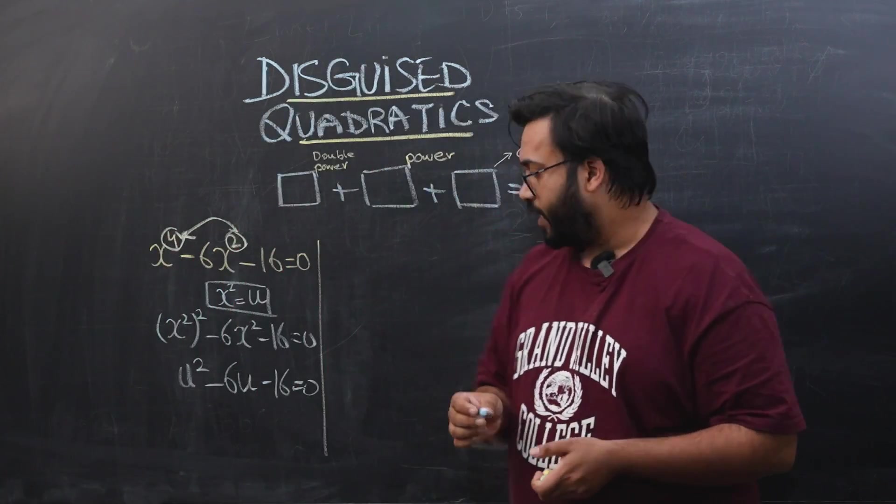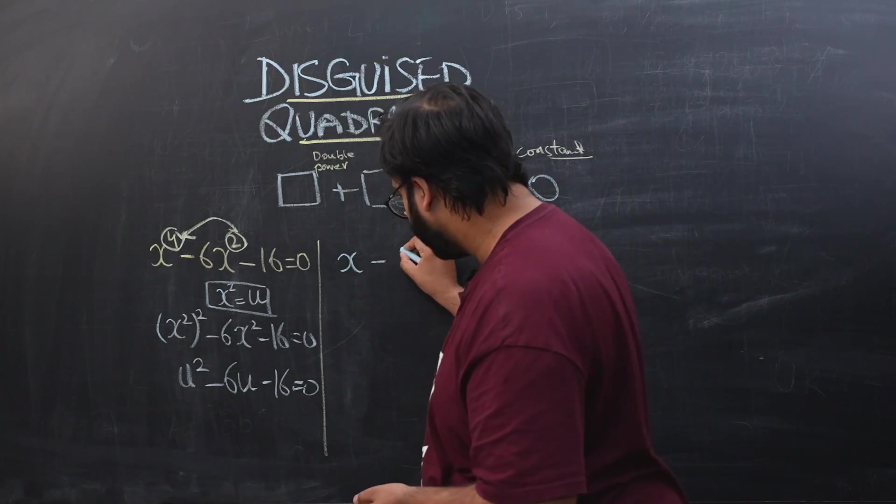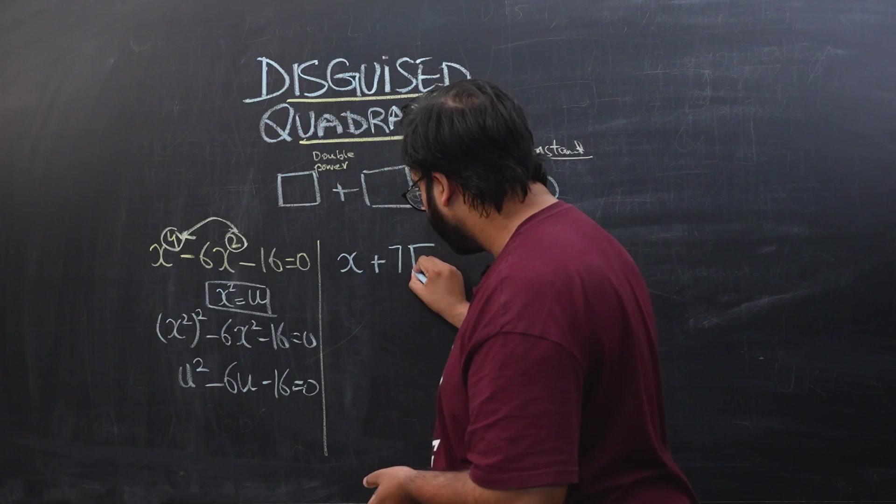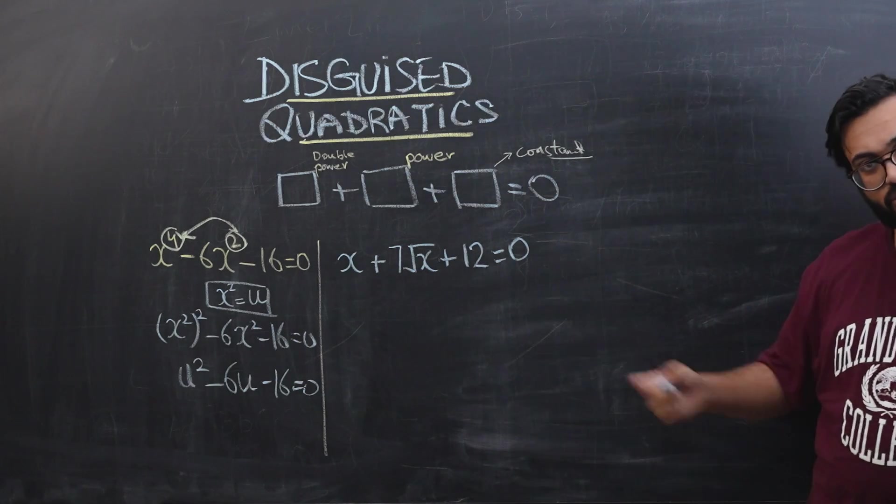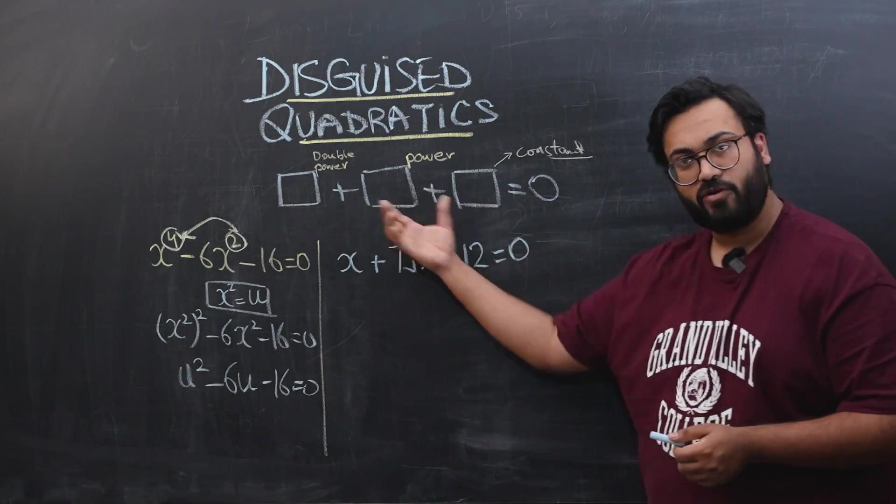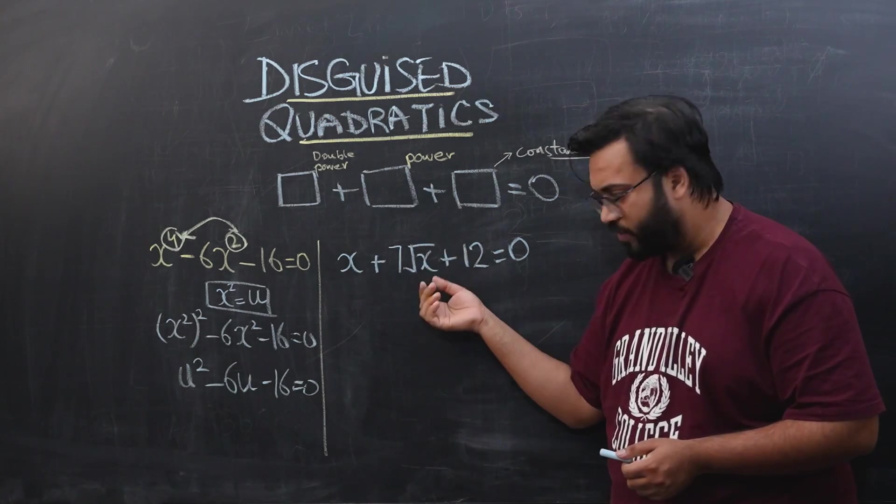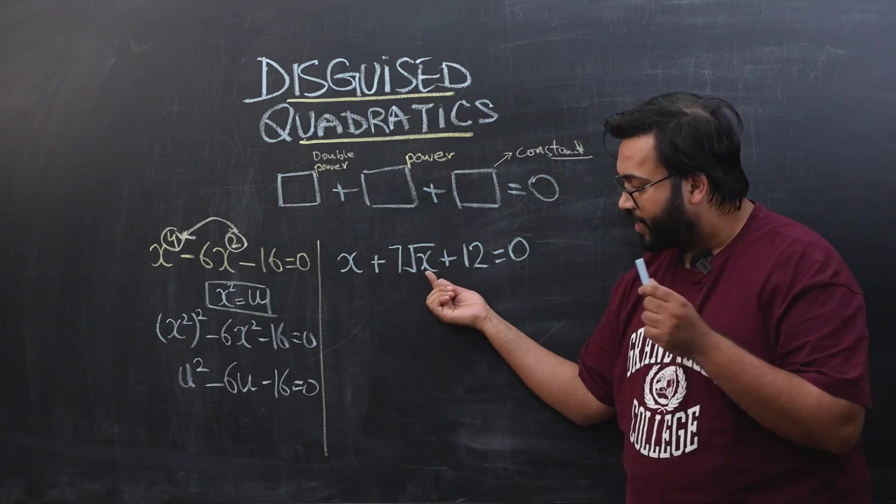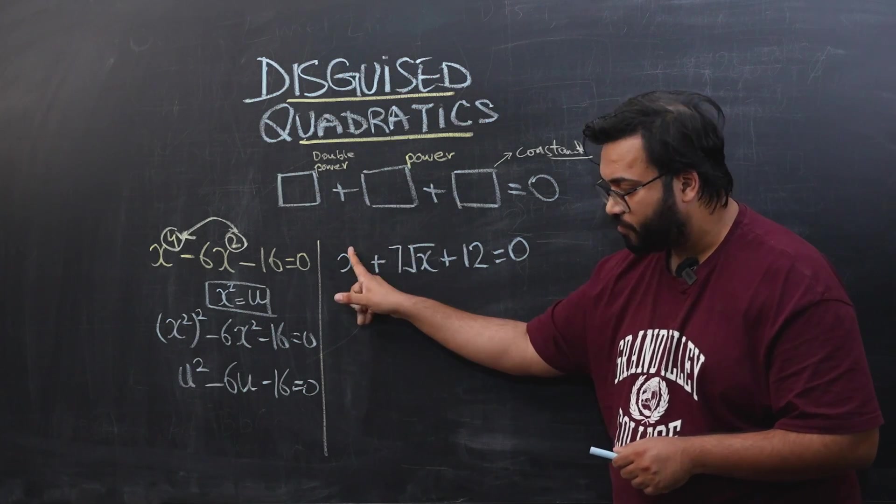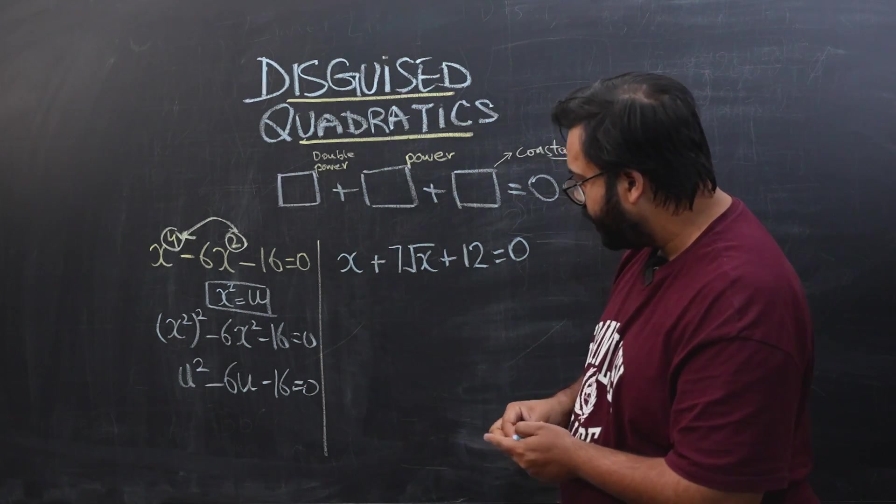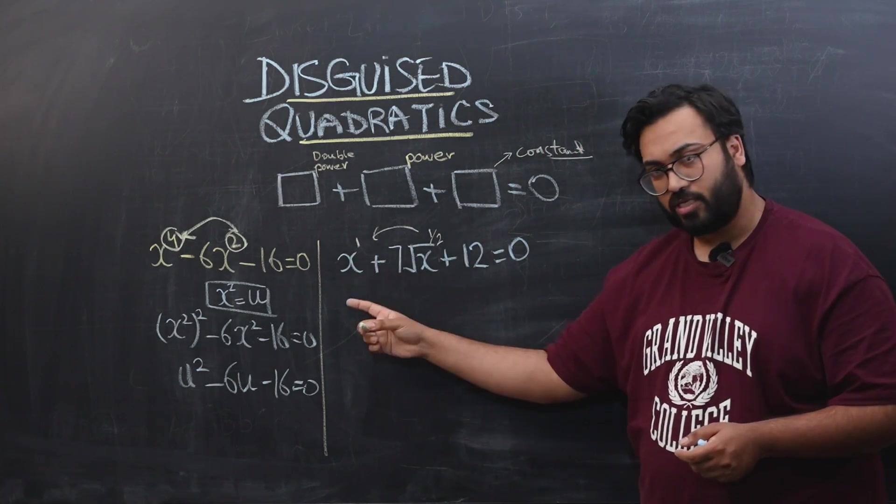Similarly, let's see another example. If you have x plus 7 under root x plus 12 equals zero. Now, this is also a disguised quadratic. You guys can see that this is following a three-term pattern. First of all, this term is a constant. This term has some value of x as a power. You can see a square root of x means this has a power of 1 by 2. Now, 1 by 2 doubled would be equal to 1. This is following the exact pattern. The power over here is 1 by 2, and I have double that power, which is 1 over here. This is a disguised quadratic.